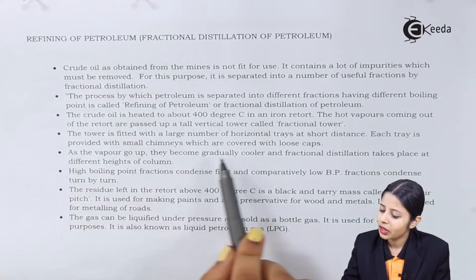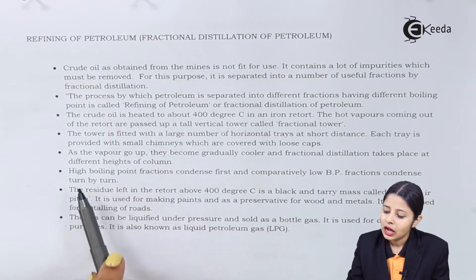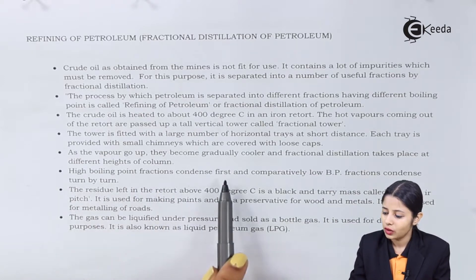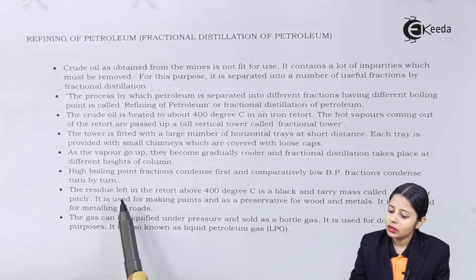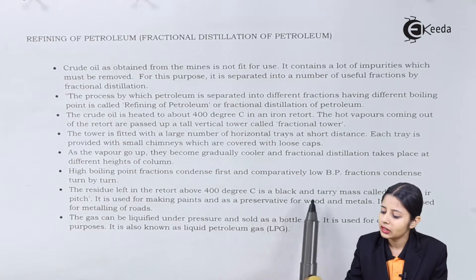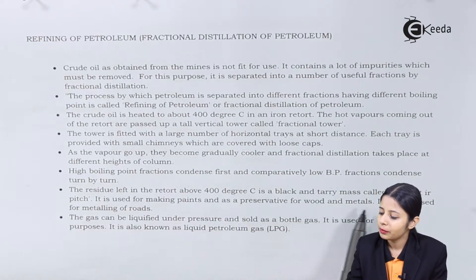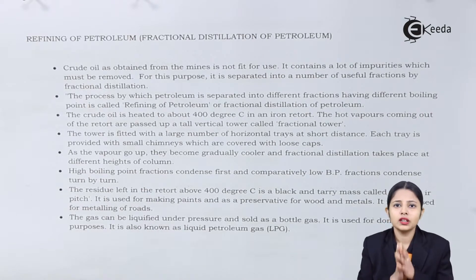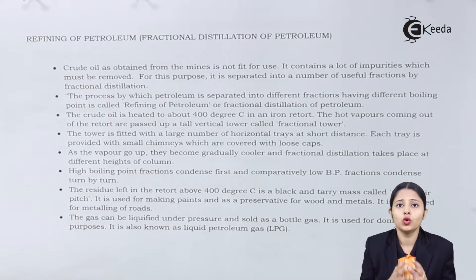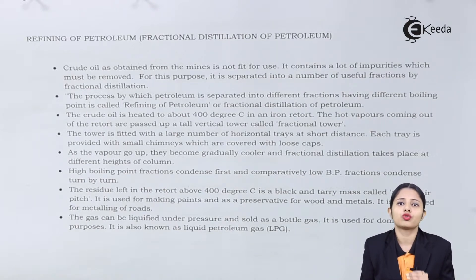As the vapor goes up, it becomes gradually cooler and fractional distillation takes place at different heights of the column. High boiling point fractions condense first and comparatively low boiling point fractions condense turn by turn. The residue left in the retort above 400 degrees Celsius is a black tarry mass called asphalt's pitch. It is used for making paints and preservatives for wood and metals, and also for metaling of roads. Even the impurities of crude oil are useful for different purposes.